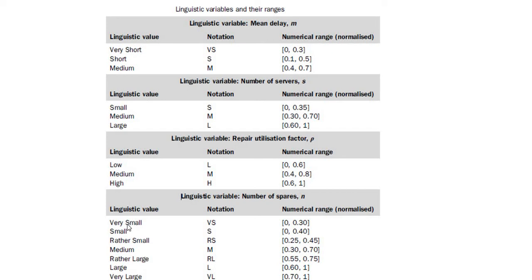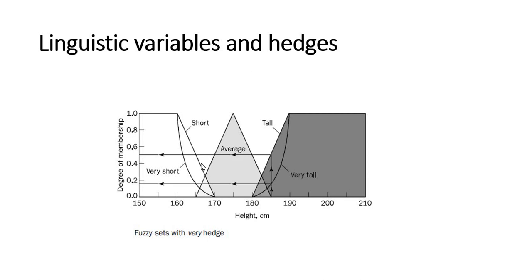We have low, very small, small, rather small. The lowest one is 0, the highest one is 1. If you apply linguistic variables and hedges, this represents short. If you put very, the graph will be slightly different, it will be very short. You have average here. If you have tall and put very tall, then you have this slightly different graph shape.